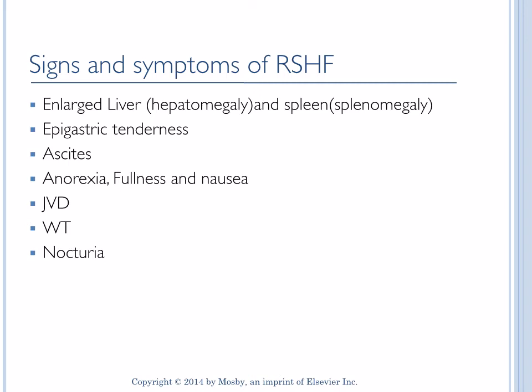Let's go to the next slide: signs and symptoms of right-sided heart failure. There will be an enlarged liver — hepatomegaly — and splenomegaly, so both the liver and spleen can get enlarged. If you have a patient with right-sided heart failure, you can see these findings because blood is backing up into the venous system, where it meets the liver and spleen and causes engorgement of these organs.